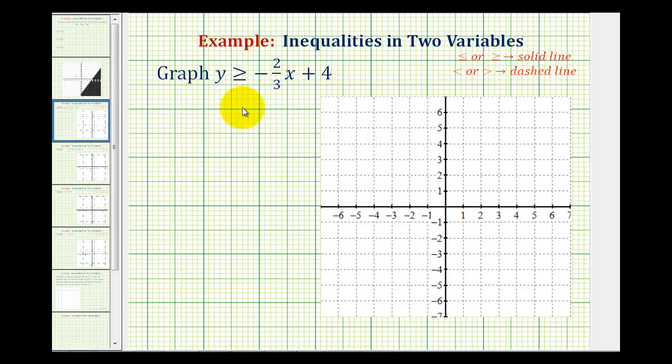To do this, we treat this as a line and we're going to graph y equals negative 2/3x plus 4. This is actually going to be the boundary for the region that we'll end up shading. But there's one more thing to mention before we graph this line.